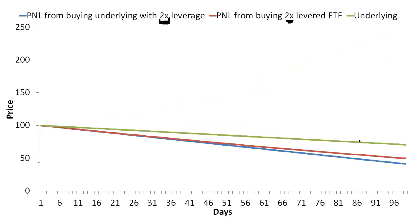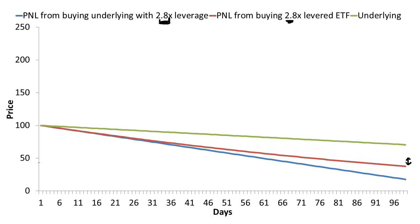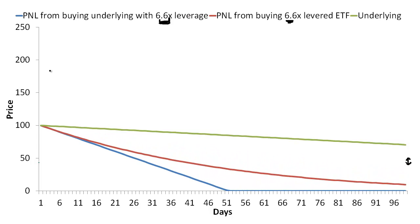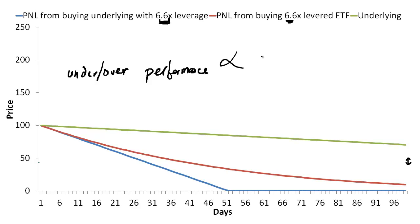Finally, when I change the path such that the underlying is steadily going down, you can see the outperformance of the ETF relative to levering up the underlying yourself change from that amount for a 2-to-1 levered ETF to something larger as I increase the degree of leverage. The point here is that the degree of under or over performance of the levered ETF is proportional to the amount of leverage in the ETF.